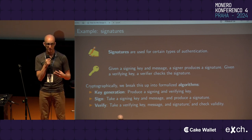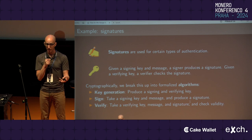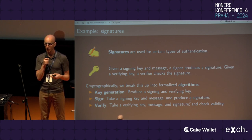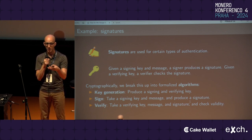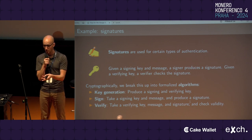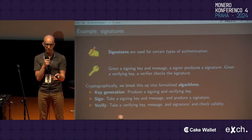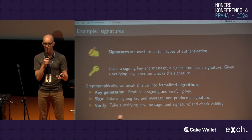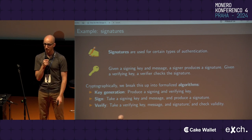The basic idea is that if I have a signing key and a message that I want to sign, I, the signer, can produce a signature cryptographically. And then you, who want to verify the signature, have a corresponding verifying key. You take the verifying key, the message, and the signature that I produced, and determine if it is an authentic or valid signature or not.